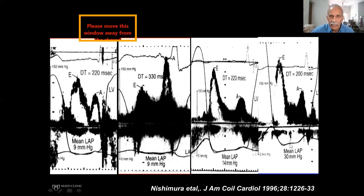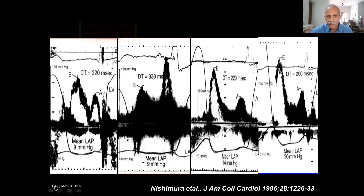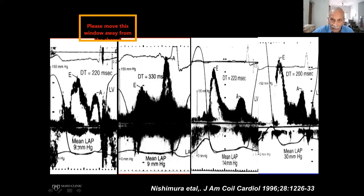When the pressure increases further, the baseline diastolic pressure also goes up — from 9 to 14 to even higher. Now E/A ratio is greater than 2 and deceleration is getting shorter. This is going into restrictive filling. The Doppler profile and Doppler measurements correspond with hemodynamic measurements. That is the reason hemodynamic measurements are no longer routinely made to assess diastolic function unless there is a disparity.